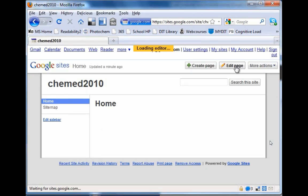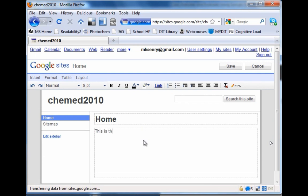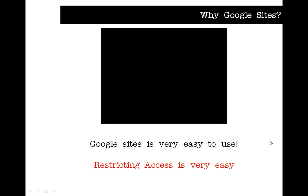Here's my website — the main page. I can click on Edit Page, put in my first entry, and there we go. That's my website created with the first entry. So it's really easy to use, and as you saw, restricting access is very easy. You can simply invite students, or whoever you want, to that website.